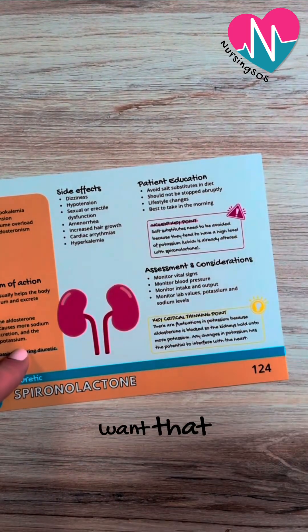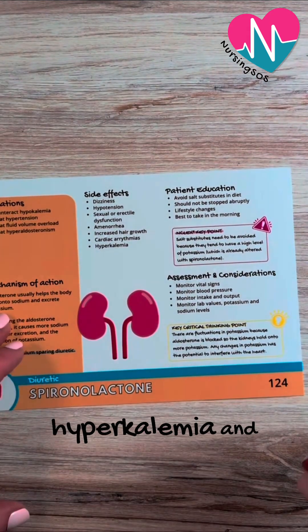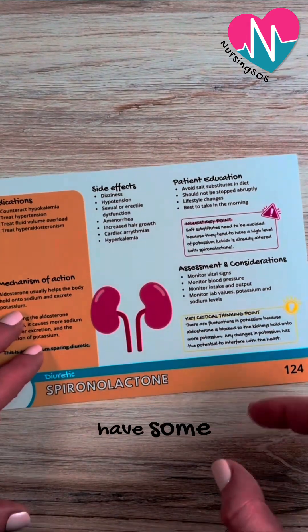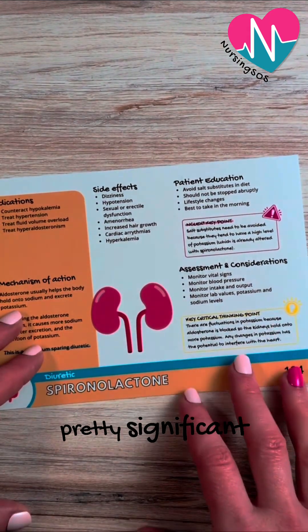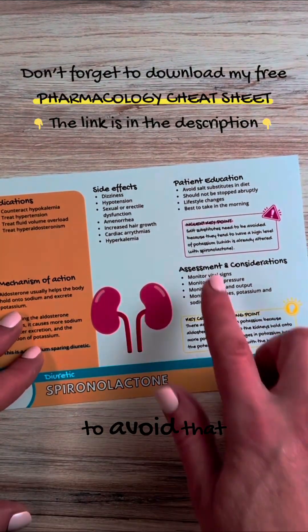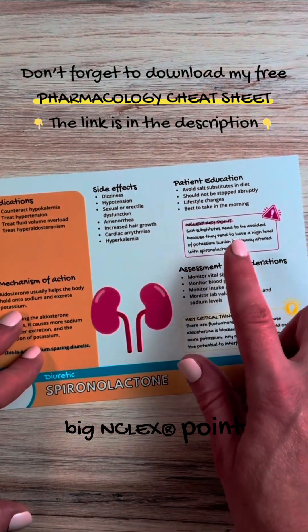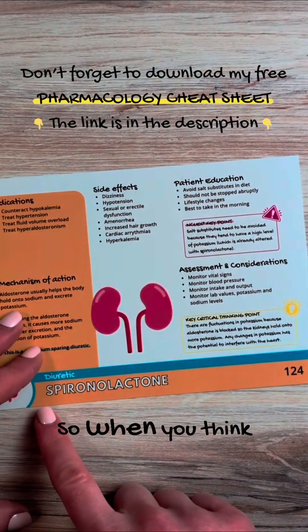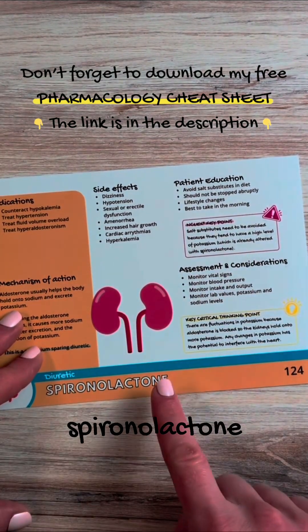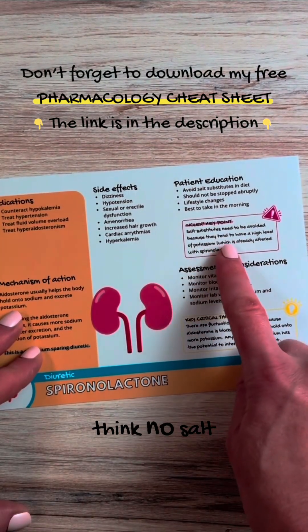We don't want that. Potassium can have some pretty significant effects on the body — hyperkalemia — so we want to avoid that. That's a really big NCLEX point that the NCLEX likes to test on. So when you think spironolactone, think no salt substitutes.